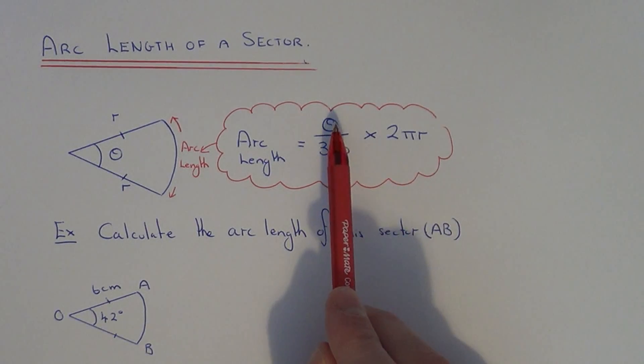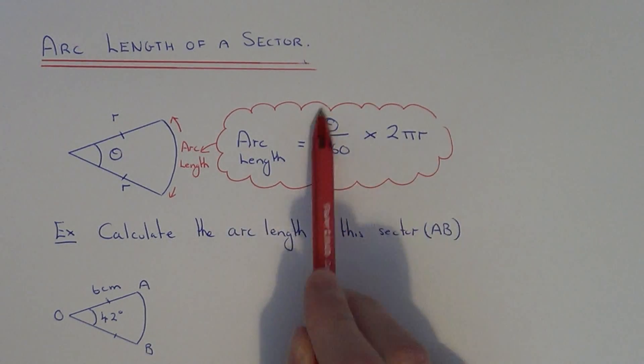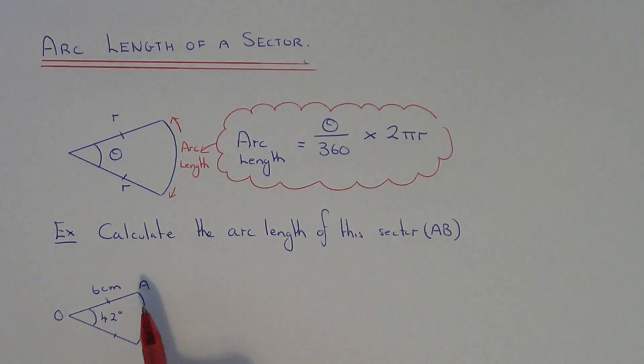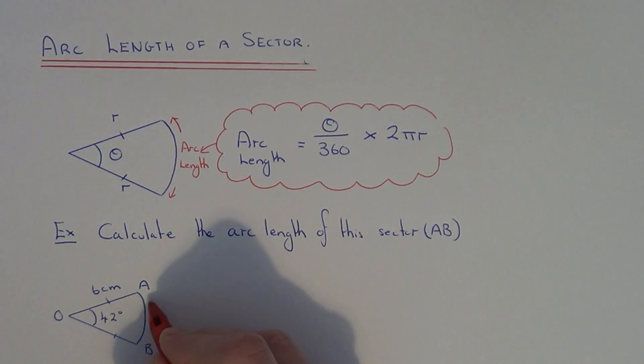So we just need to substitute the angle and the radius into this formula. Let's have a look at an example. We've got to calculate the arc length of this sector here. So we need to work out the length AB.